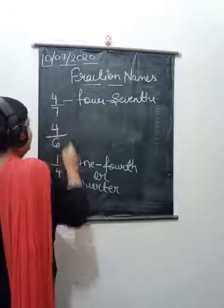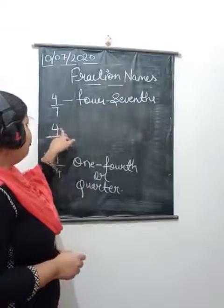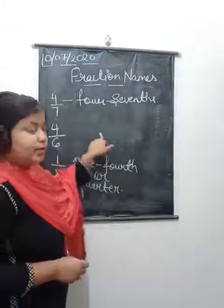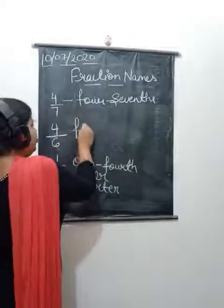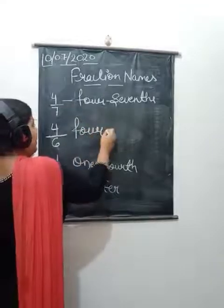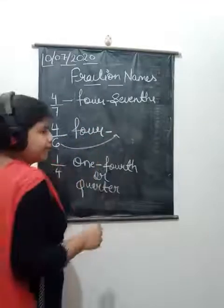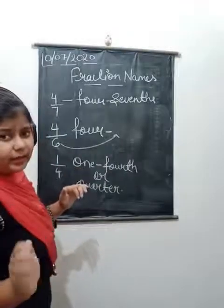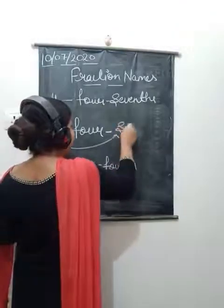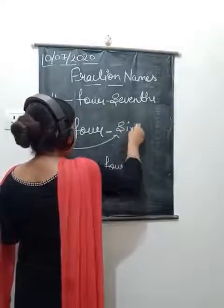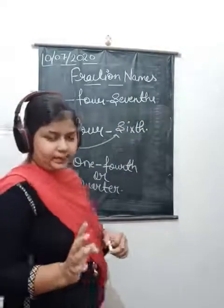Now tell me: four sixth. So numerator 4 stays as it is, and for the denominator - remember, we write the denominator in ordinal form. 6 becomes '6th'. So the answer is 'four sixth'. That is what we have to do.